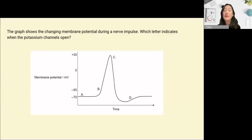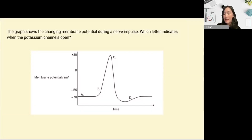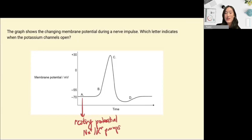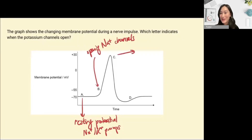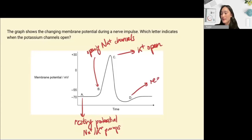A common question type is interpreting oscilloscope traces showing changes in membrane potential during an action potential. Here we have points A, B, C, and D — pause the video and annotate what is occurring at each. At A, we have our resting membrane potential, actively maintained by the sodium-potassium pumps. At B, a threshold potential is reached and voltage-gated sodium channels open, triggering depolarization. At C, the potassium K+ channels open, leading to repolarization and a slight hyperpolarization, before D where the resting potential is re-established.